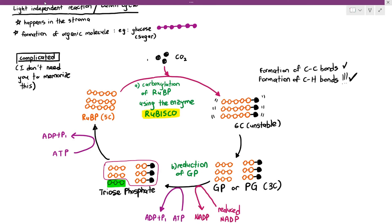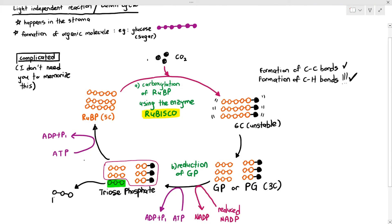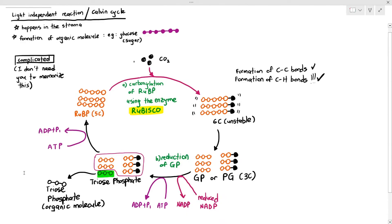Only five triose phosphates are used to regenerate RuBP, leaving one triose phosphate remaining. That remaining triose phosphate is the organic molecule that will be used to make glucose, amino acids, or other products. So the three steps of the light-independent reaction or Calvin cycle are: first, carboxylation of RuBP using the enzyme Rubisco; second, reduction of GP or PG; and third, regeneration of RuBP.